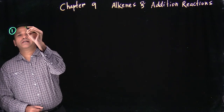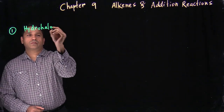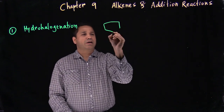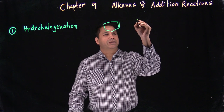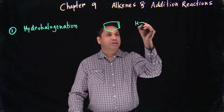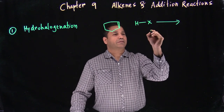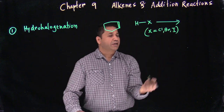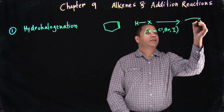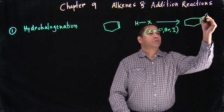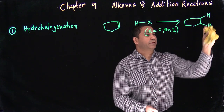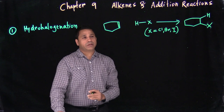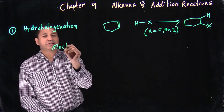The first reaction is hydrohalogenation. The basic reaction: if you have a double bond and add HX — where X can be chlorine, bromine, or iodine — you add HX across the double bond. One carbon gets the H and the other gets the X. For the mechanism, let's use a specific example with HCl.